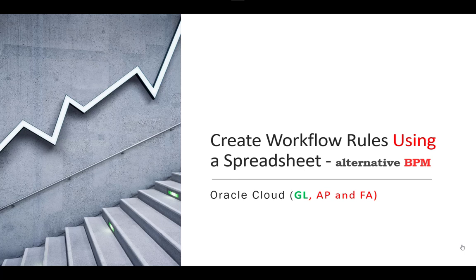In this video I will talk about how to create workflow rules using a spreadsheet. Using a spreadsheet means an alternative to BPM — Business Process Management. Currently in Oracle Release 13, and I think Release 12 and later, to create approval workflow rules in GL, for example, or Fixed Assets, instead of BPM, you have to implement your rules through a spreadsheet.